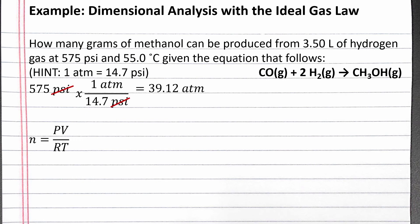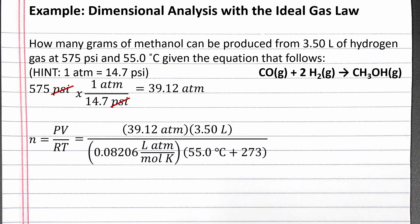Completing the calculation, we get 39.12 atmospheres. We can plug this into our ideal gas law equation along with the volume in liters and converting the temperature from degrees Celsius to Kelvin by adding 273 to 55.0 degrees Celsius.